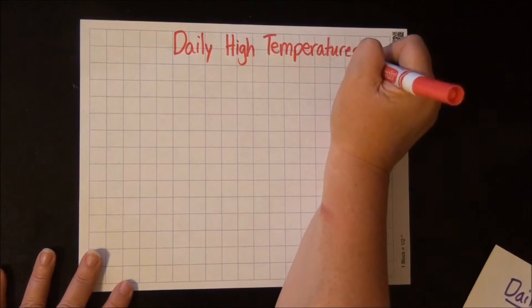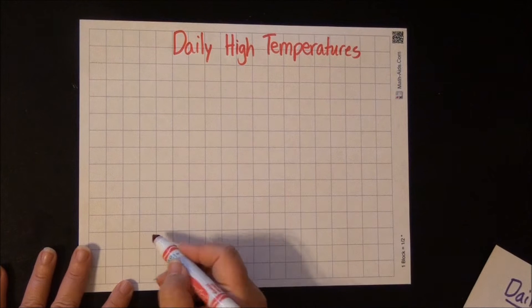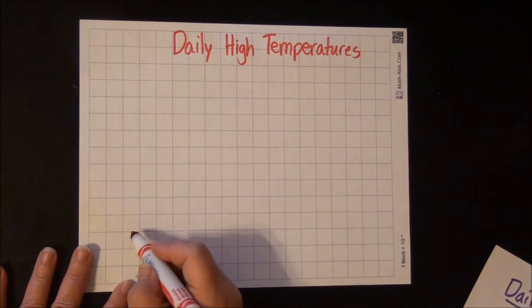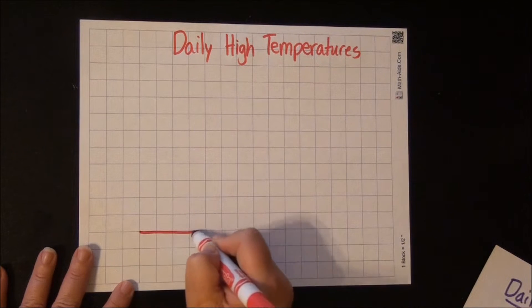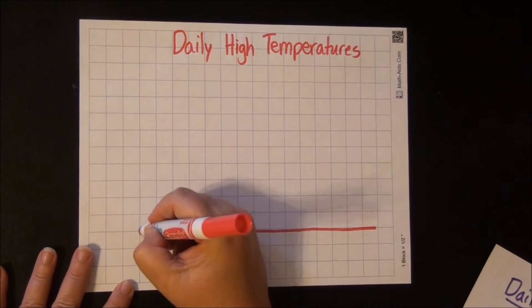Now just like with the bar graph, you need to have an X and Y axis. The X axis is always horizontal, the Y axis is always vertical. It's important to remember the difference between the two. So this is your X axis, and here is the Y axis.